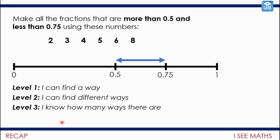For the extend challenge, I wanted to run through this — you might not have seen it. The task was: make all the fractions that are more than 0.5 and less than 0.75 using the digits 2, 3, 4, 5, 6, and 8. How many ways could you find?